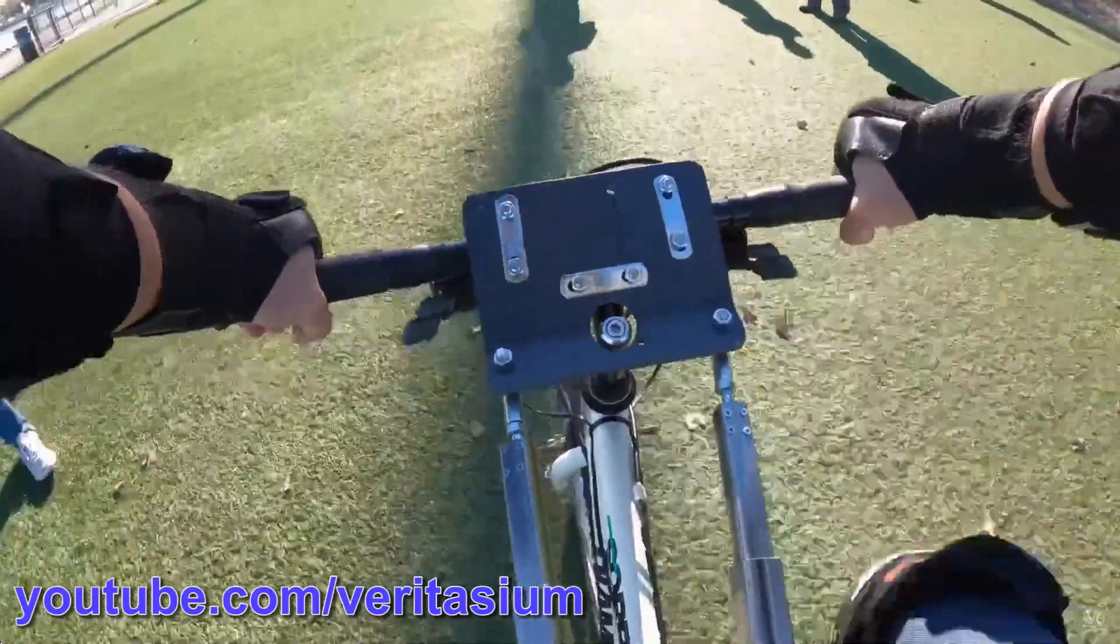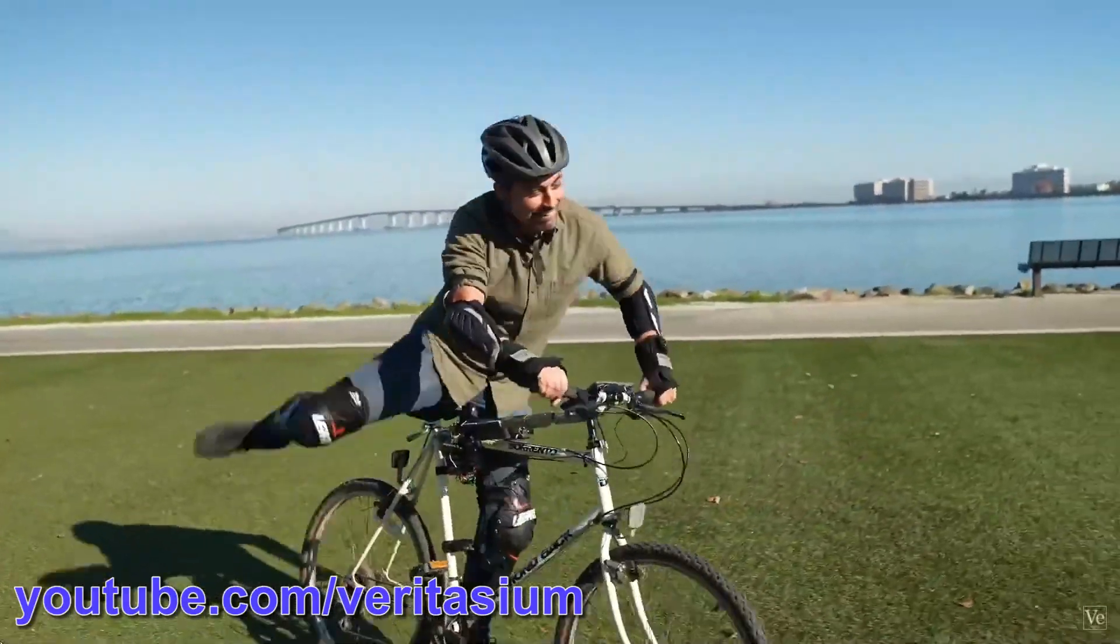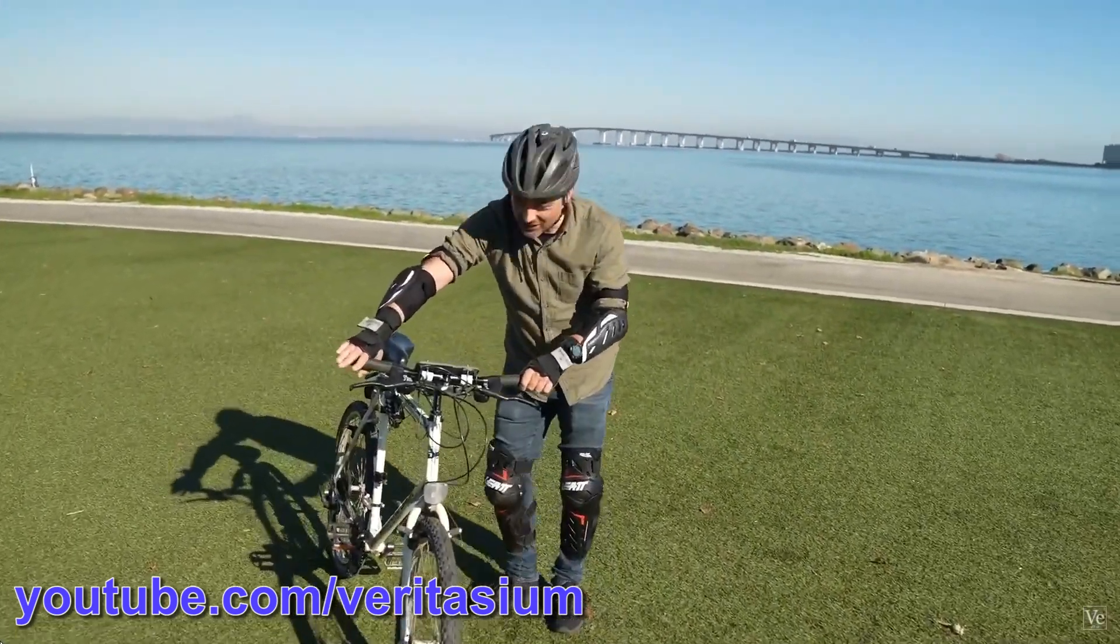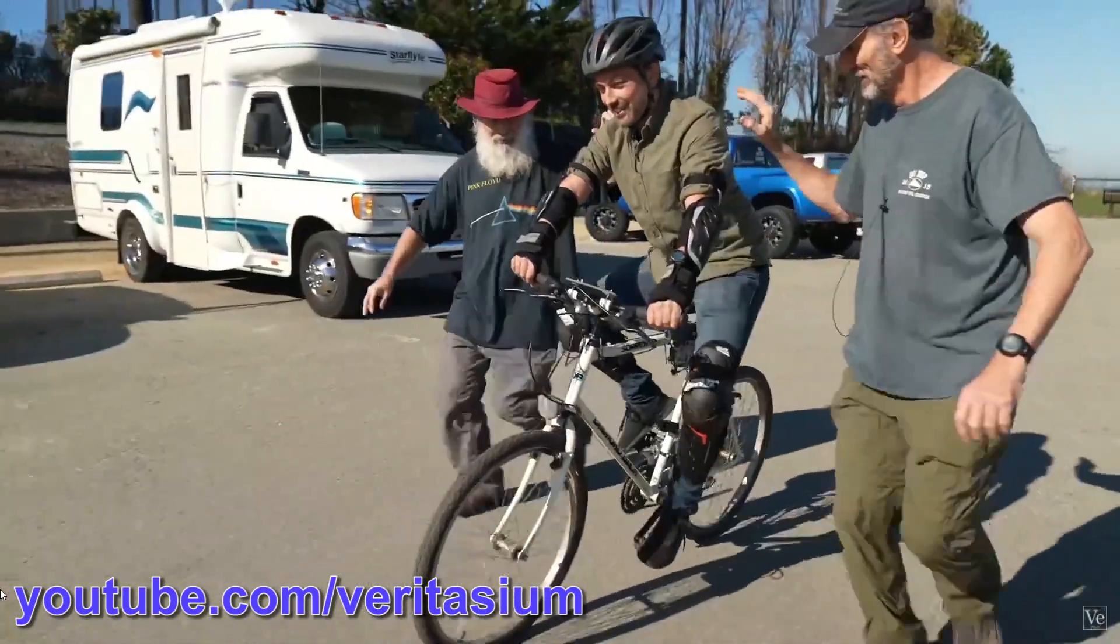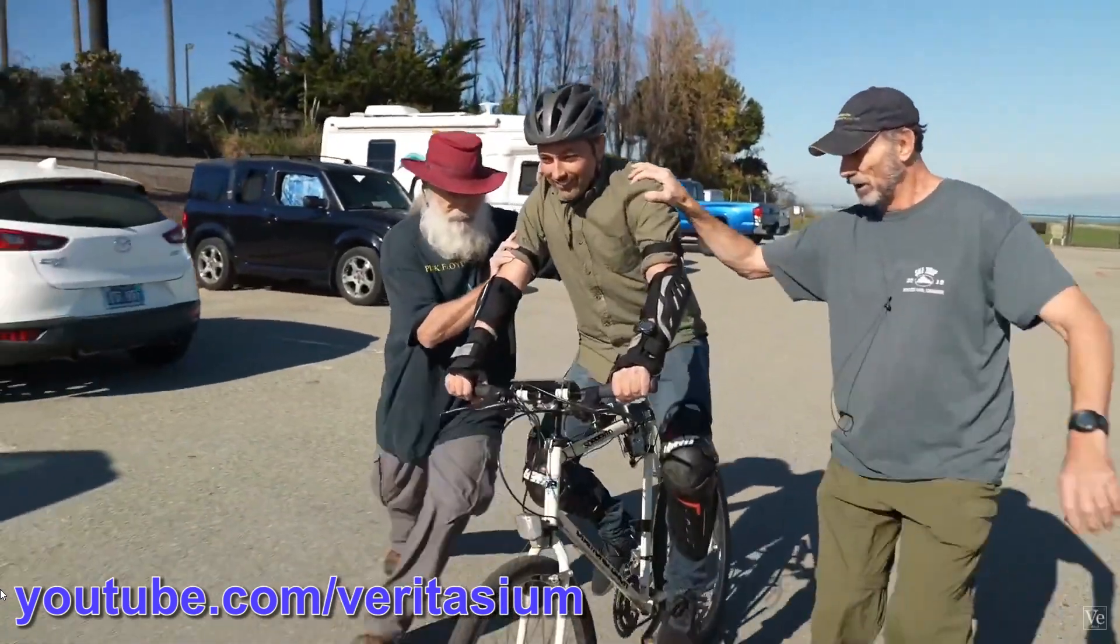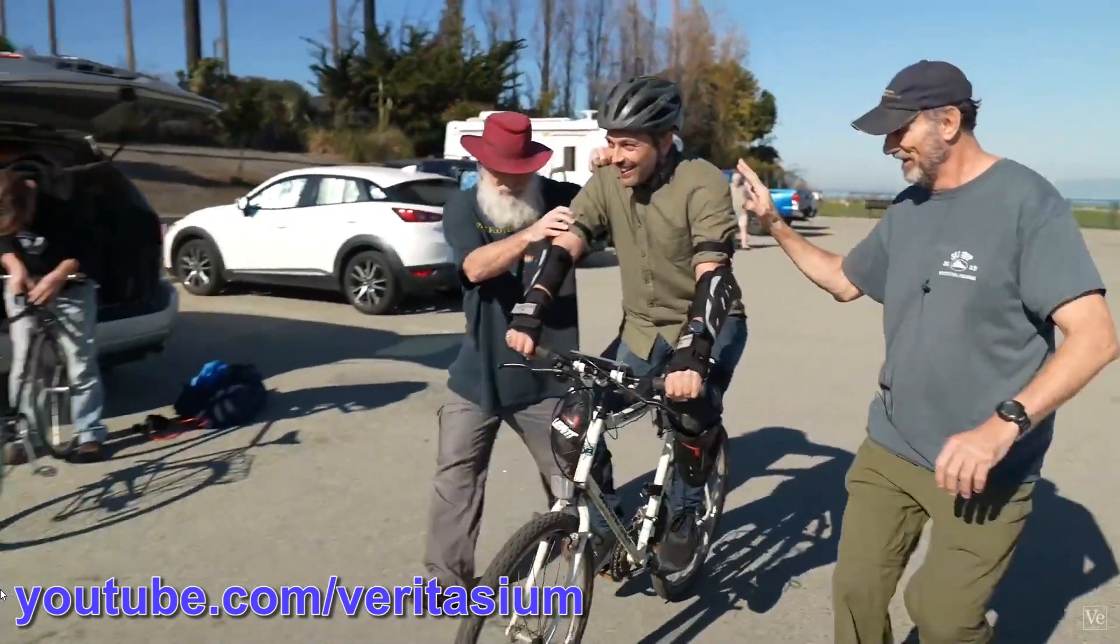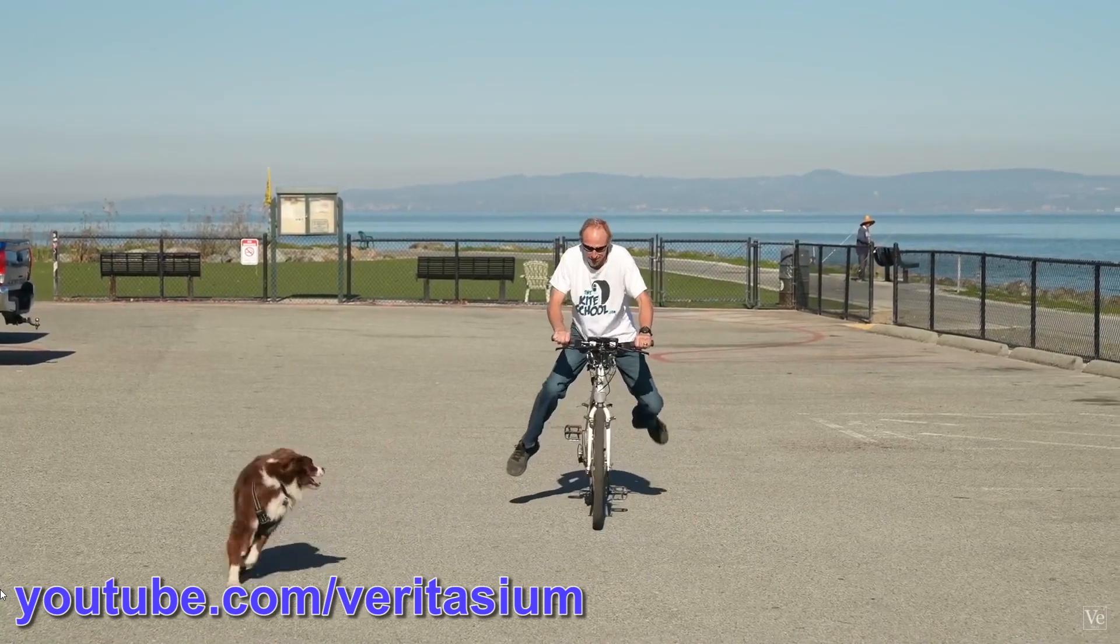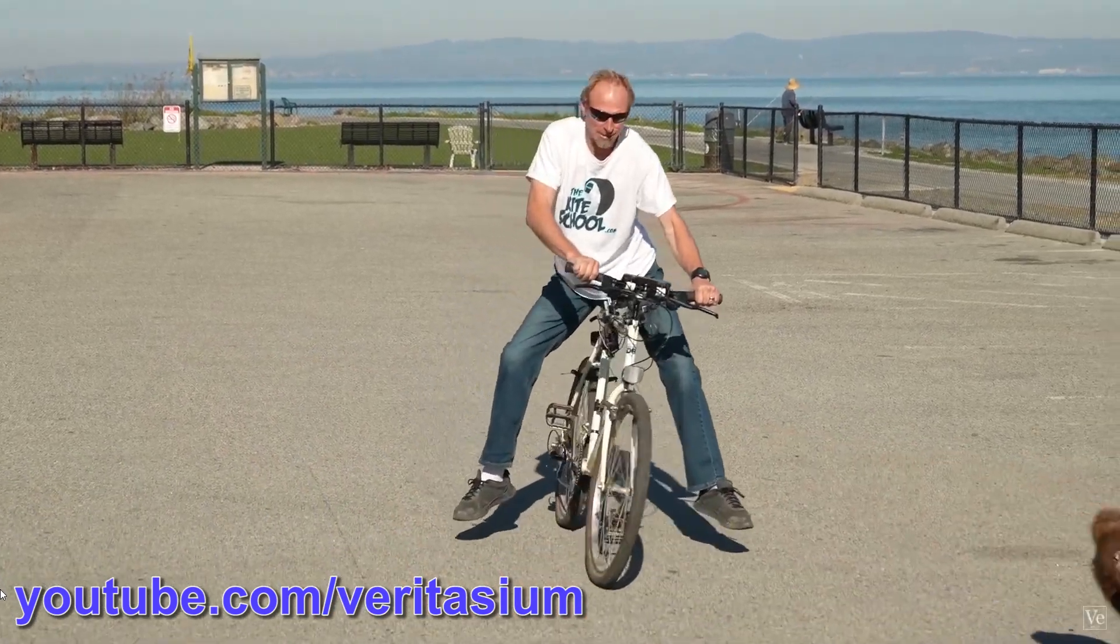I recently watched a video from Veritasium about how bicycles stay upright. A special bike was made for this video which allowed the handlebars to be limited in motion. As well as preventing the handlebars from being turned in one direction, the handlebars could also be locked entirely so the rider could only go straight. But the bike was impossible to balance on in this case, even when just trying to go in a straight line.